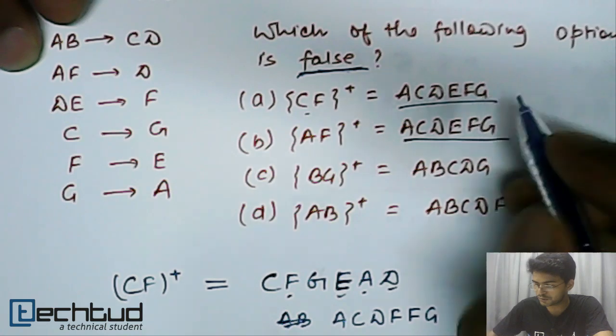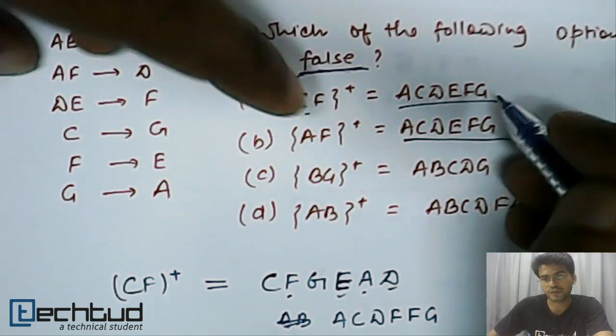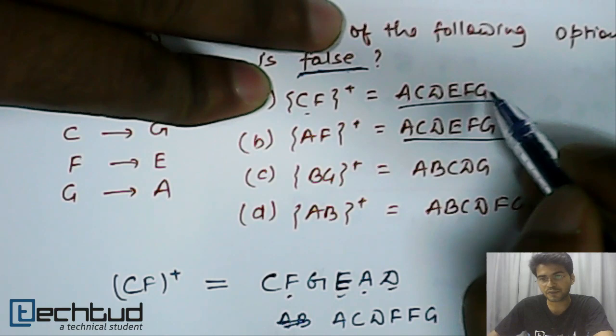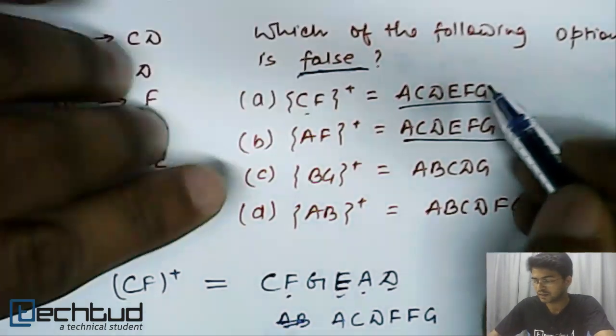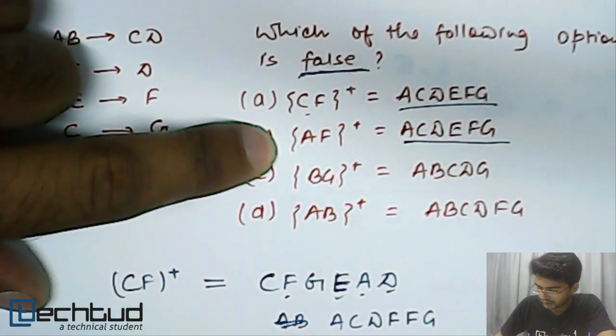So, we have already in this option. So, this option is correct. This option is correct. But as per the question, this is not our answer. So, now let's go and check about AF closure.